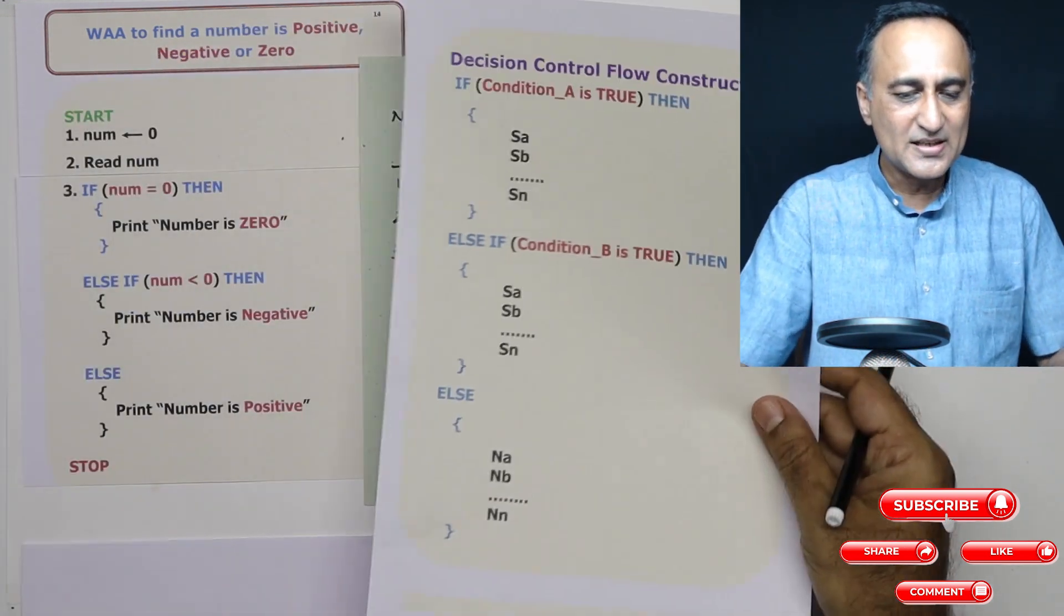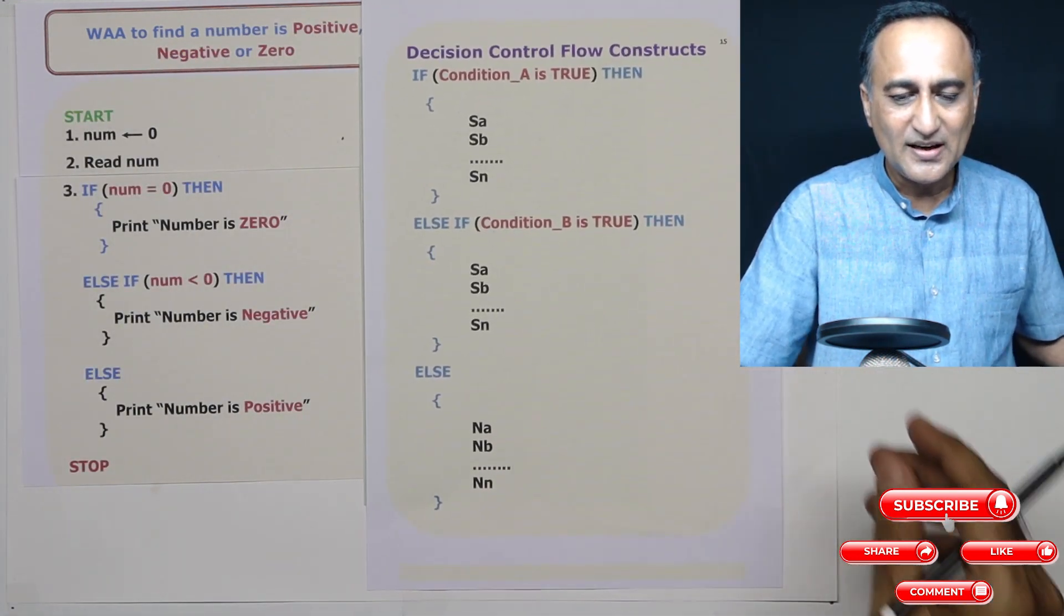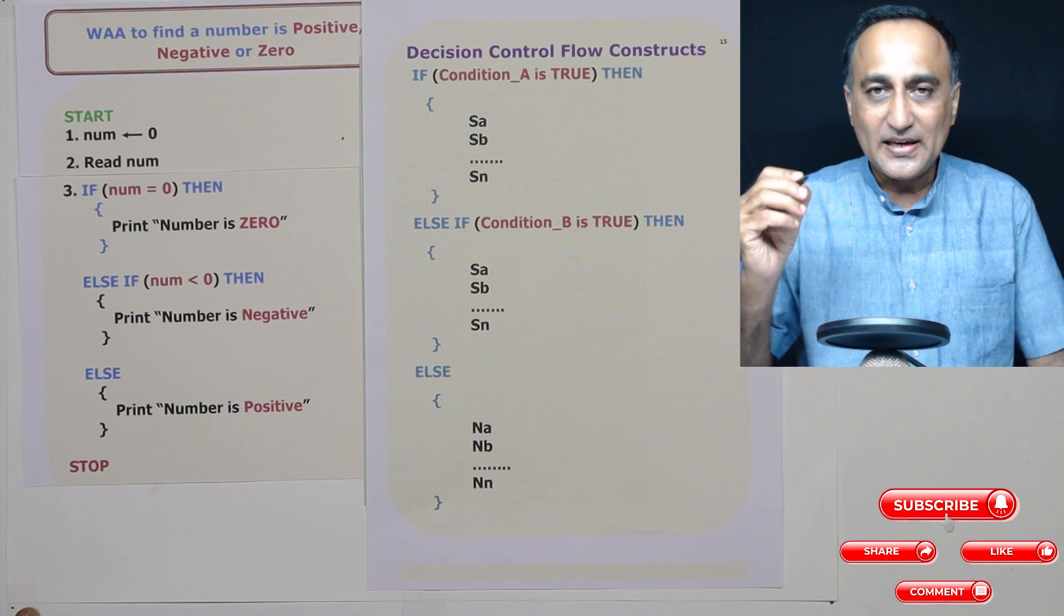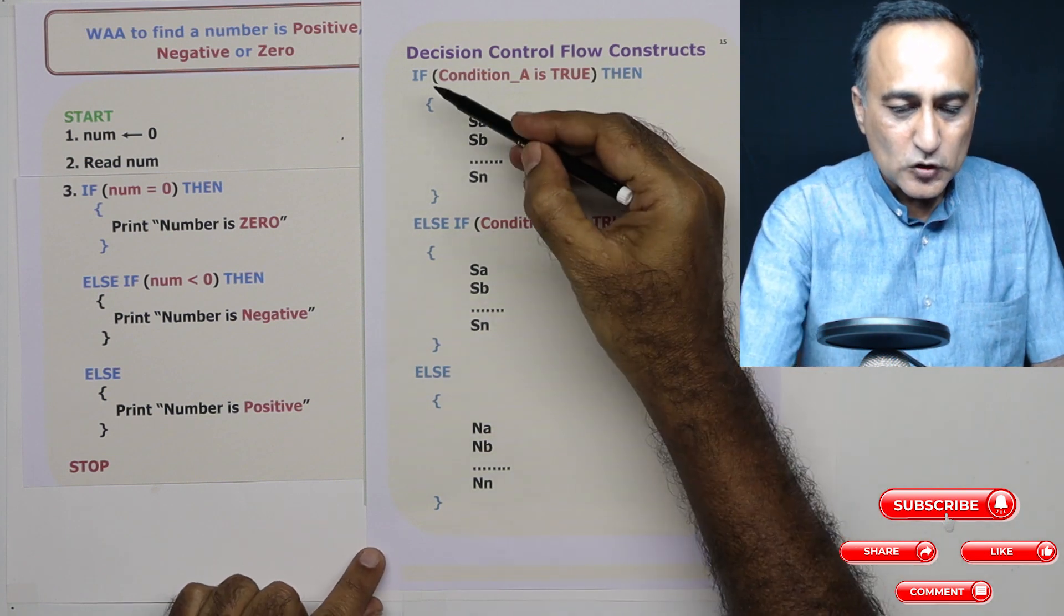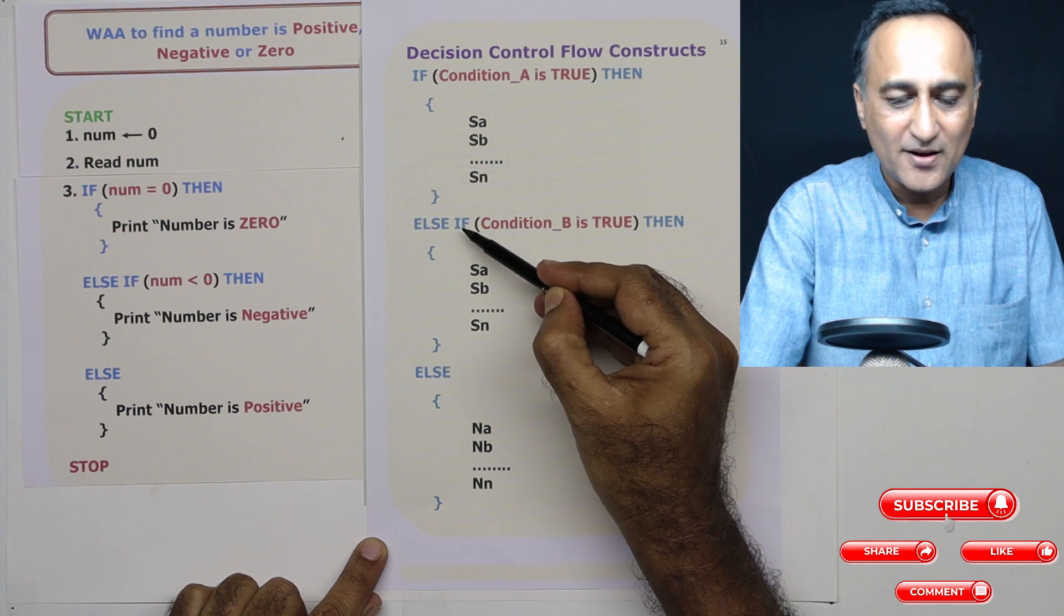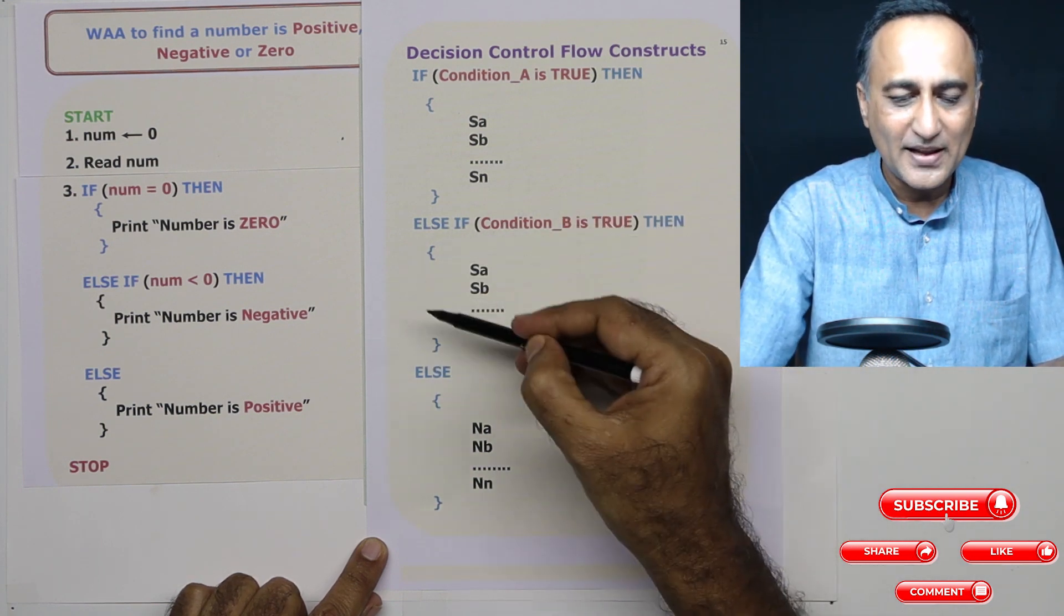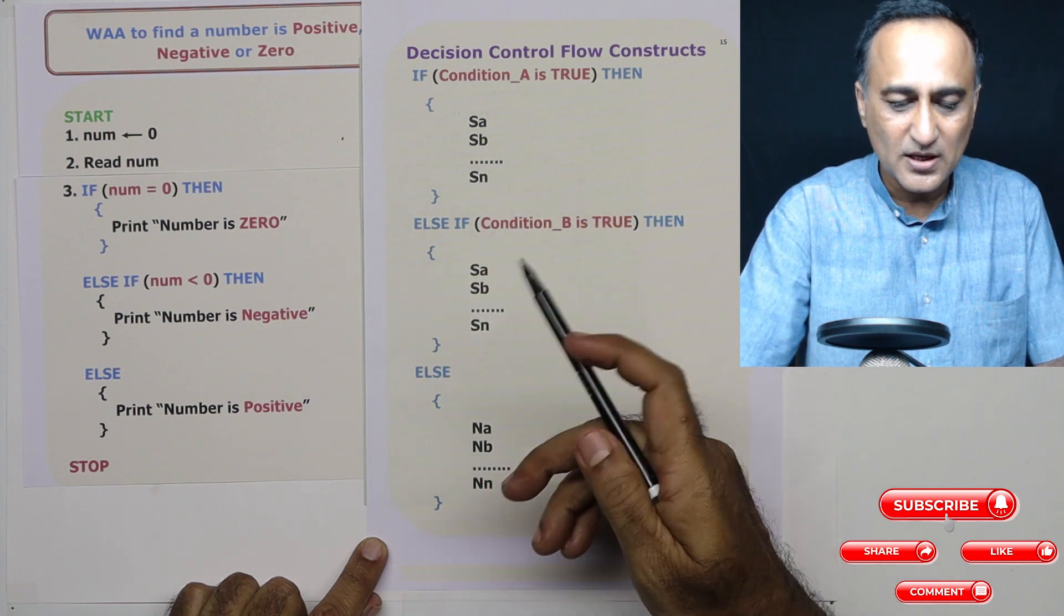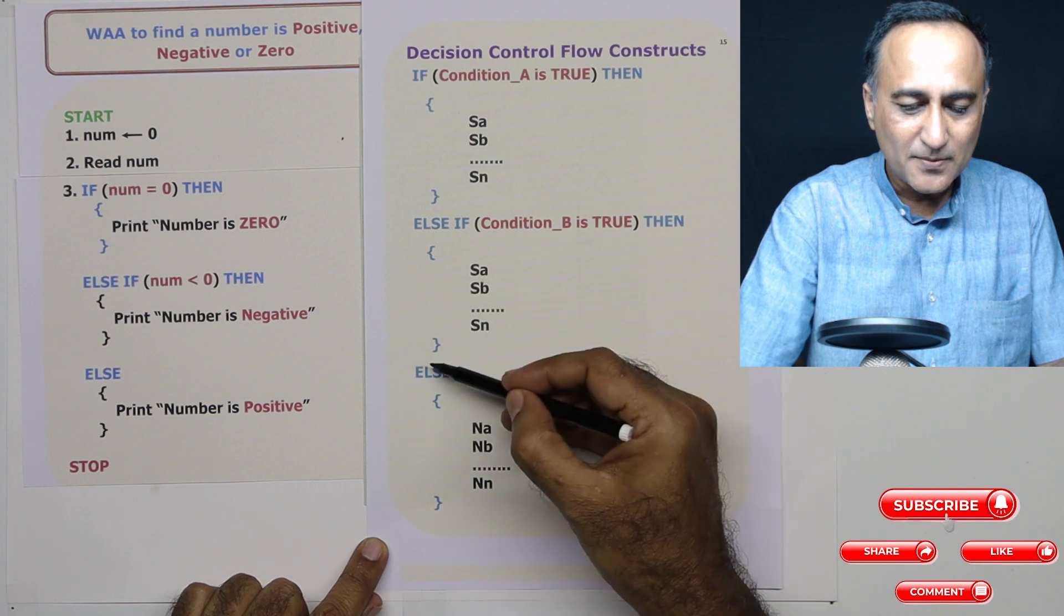Now, just to help you understand the general syntax. This is how the general syntax of the if else if else will take place. So after if you can have as many else if as you want. You can have one else if, two else if, three else if, any number of else if. I'm just showing you one. The last one after the if else if must be the else.